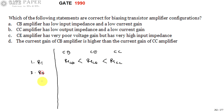Similarly, for output impedance R0: the output impedance of common base is highest, the output impedance of common emitter is moderate, and the output impedance of common collector is very small.